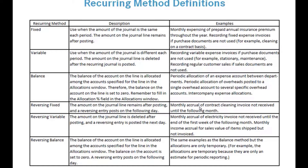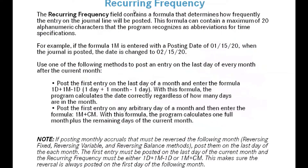Recurring frequency fields control when the next posting date is set after each post. For example, if the formula 1M is entered with a posting date of January 15, 2020, after posting the date changes to February 15, 2020 — a one-month increment. To post on the last day of every month, you can use the formula 1D+1M-1D, which correctly calculates the last day regardless of how many days are in the month.